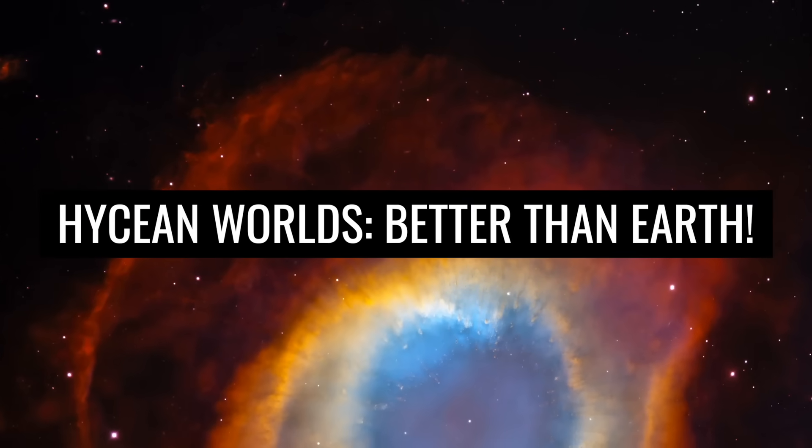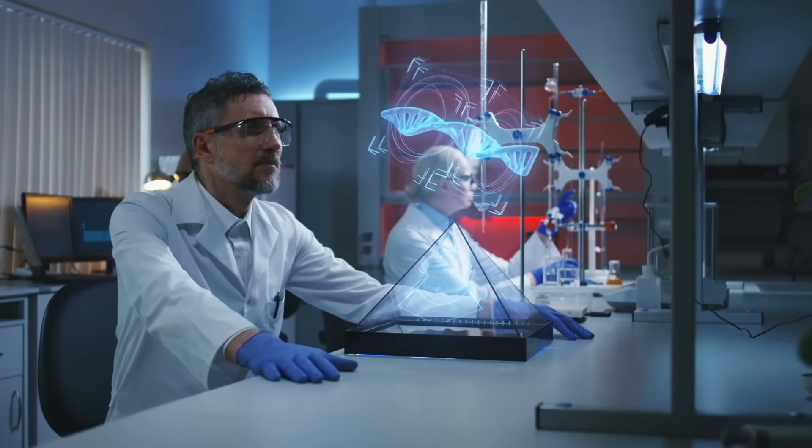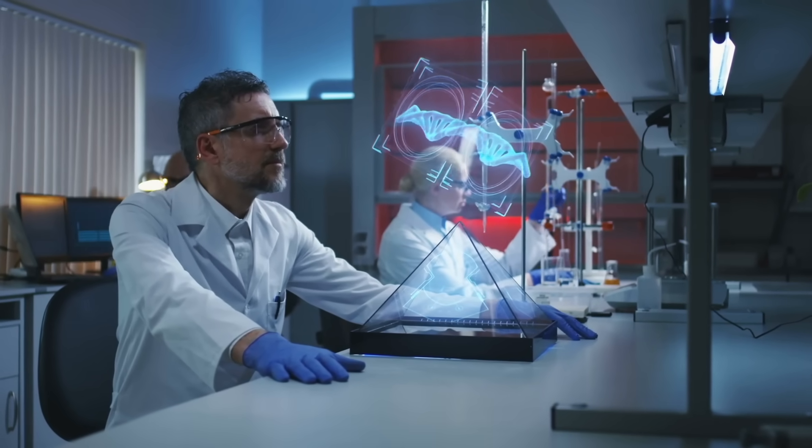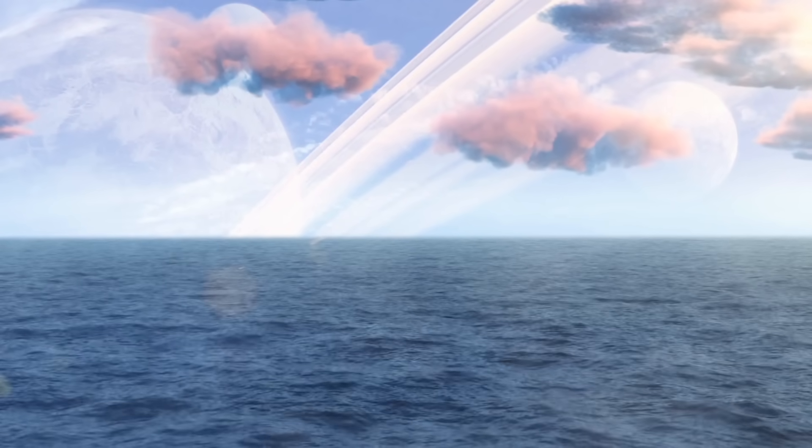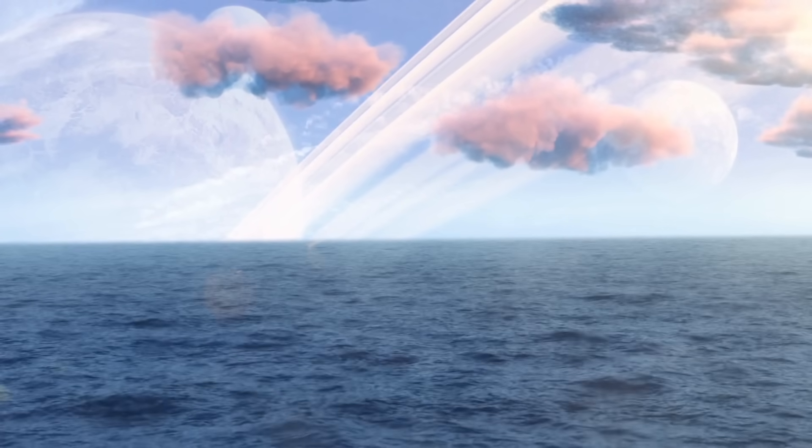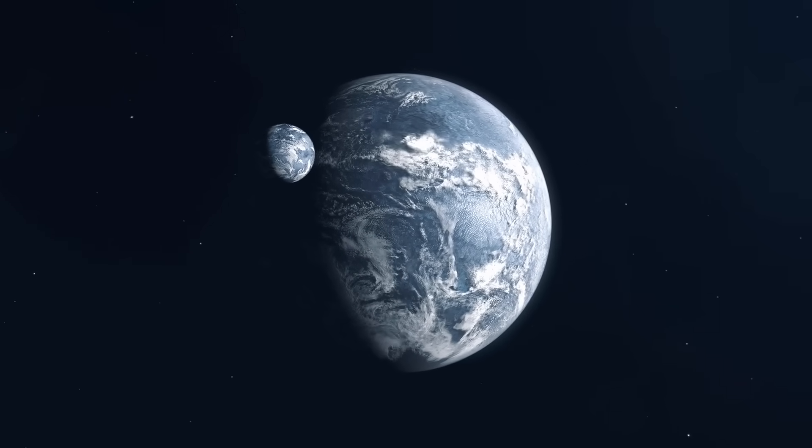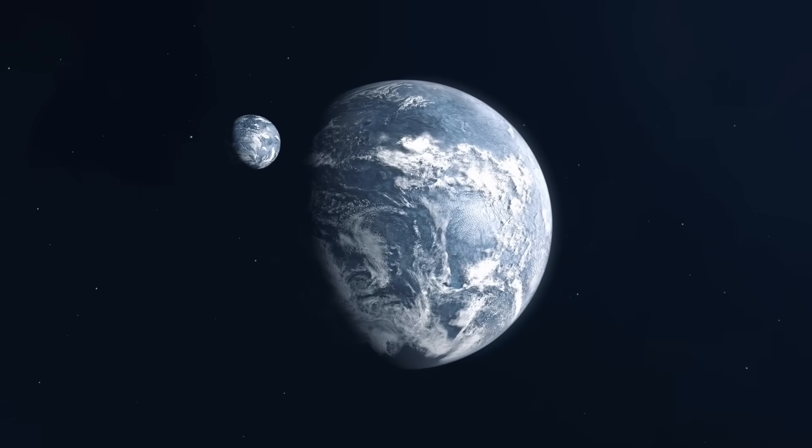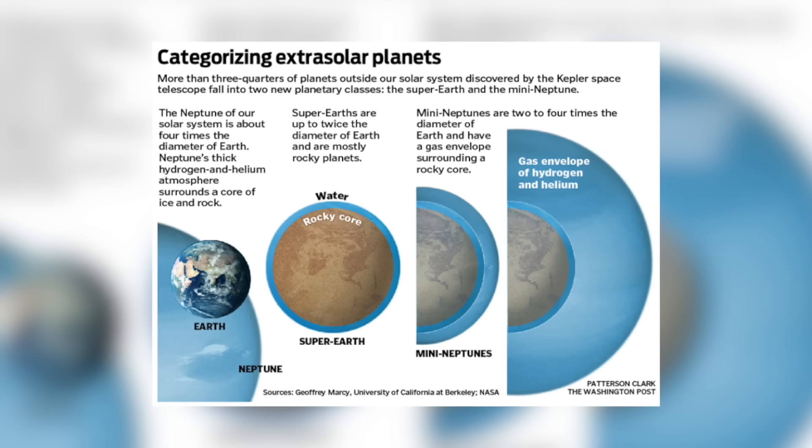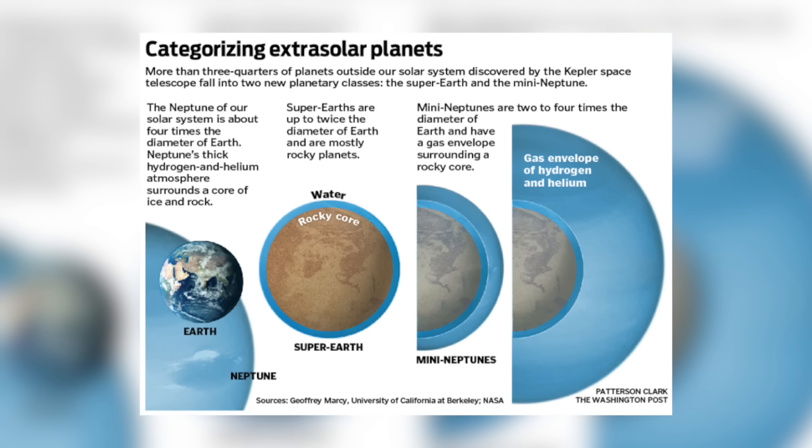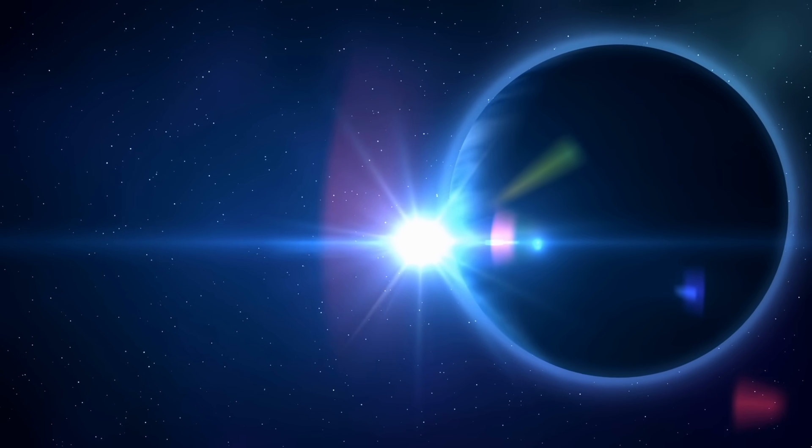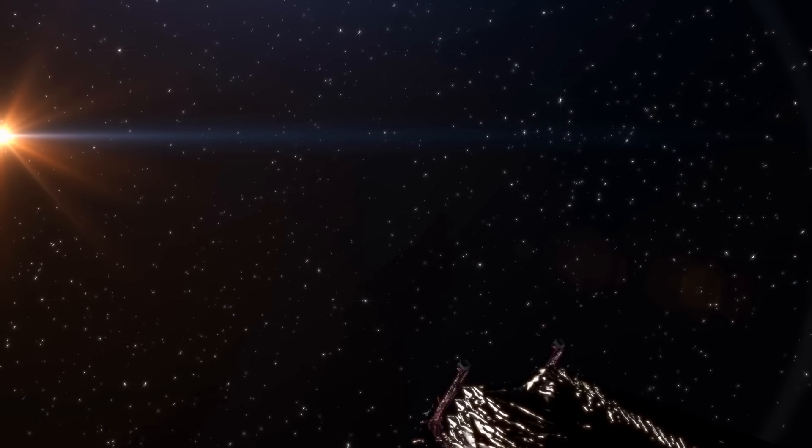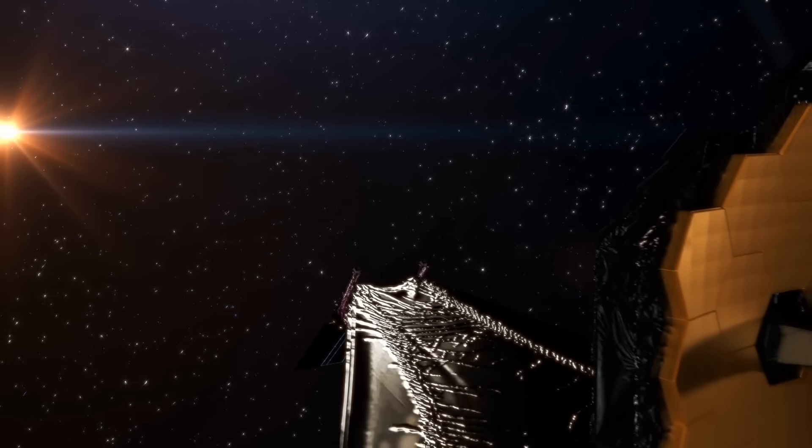Hycean worlds better than Earth. Can you imagine that scientists spent decades searching for planets similar to our Earth to finally detect life there, overlooking the category of planets that are even richer and even more life-friendly? The Hycean planets are a whole new class of exoplanets that surprise and astonish. These planets, also known as mini-Neptunes, are currently considered the largest group of planets outside our solar system. But until James Webb appeared, we had no way of finding these planets.